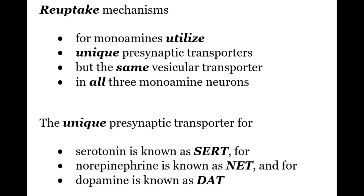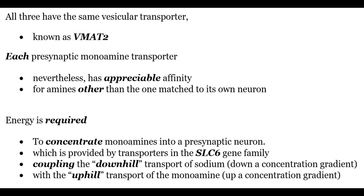Now let's further discuss the SLC6 gene family as targets for psychotropic drugs. The reuptake mechanism for monoamines utilizes unique presynaptic transporters, but the same vesicular transporter is used for all three monoamines. The unique presynaptic transporter for serotonin is known as SERT, for norepinephrine it is NET, and for dopamine it is DAT. All three monoamines share the same vesicular transporter, known as VMAT2.